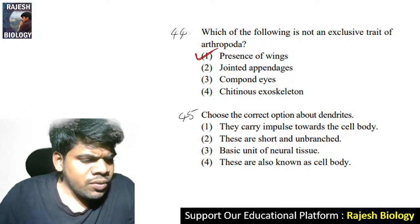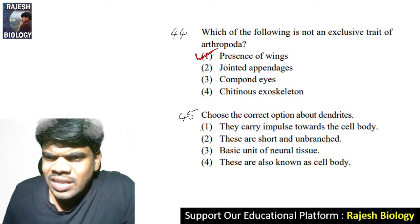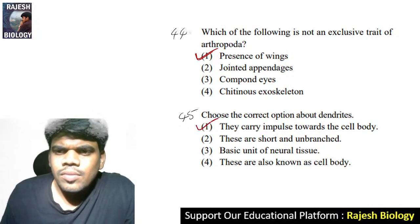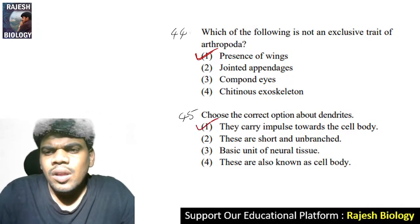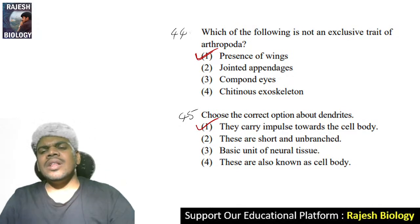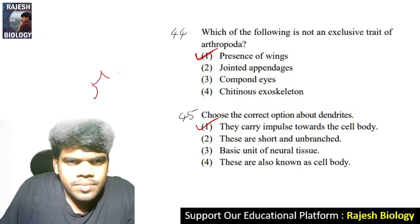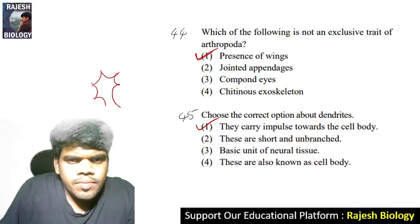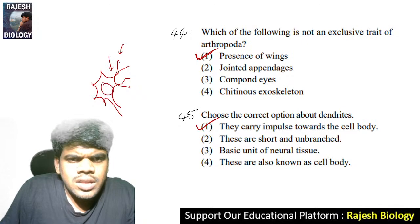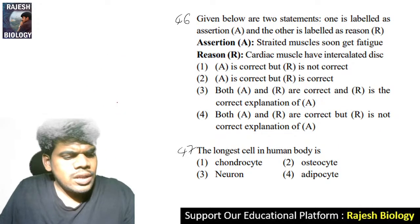Forty-fifth question: choose the correct option about dendrites. Dendrites carry impulses towards the cell body. These are the dendrites — they carry information towards the cell body. Question 45 answer is one.